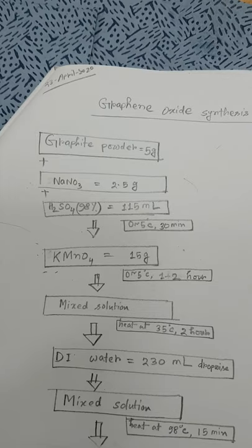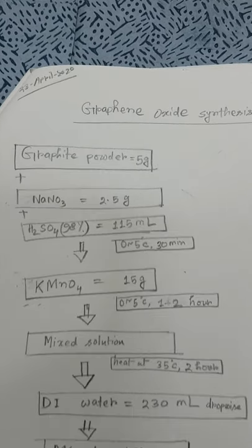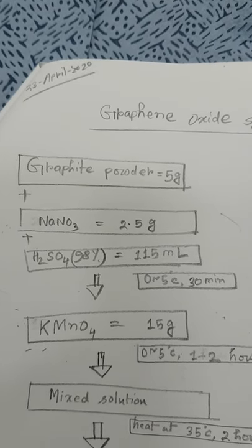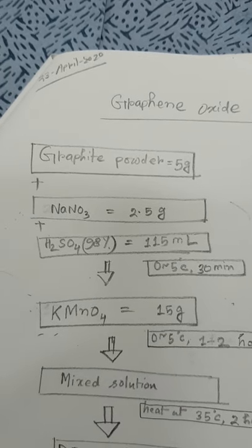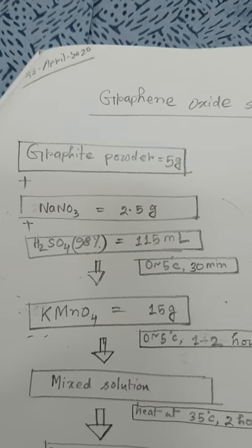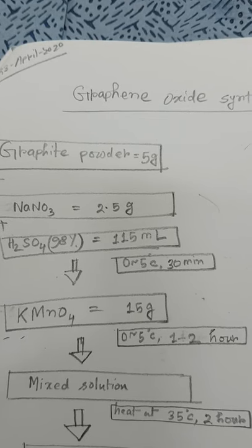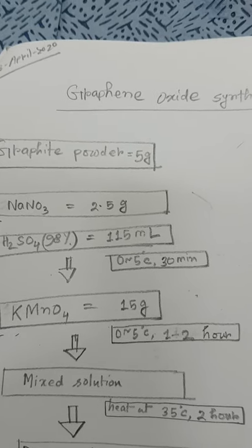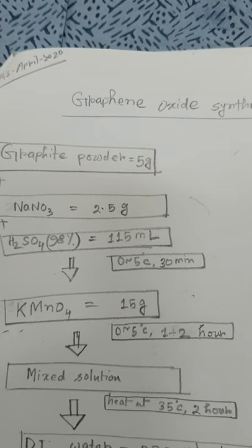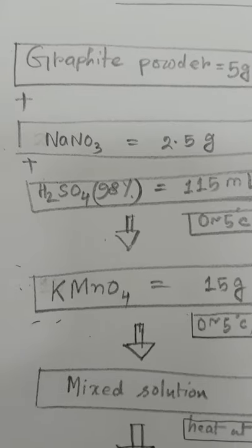Before oxidation, I took 5 grams of graphite powder followed by 2.5 grams of sodium nitrate and 115 ml of concentrated 98% sulfuric acid. The temperature must be kept at 0 to 5 degrees Celsius for 30 minutes. After that, potassium permanganate was added.